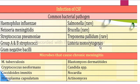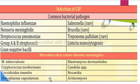Also Listeria monocytogenes. Microbes that cause chronic meningitis include Mycobacterium tuberculosis, Cryptococcus neoformans, Coccidioides immitis, Histoplasma capsulatum, Blastomyces, Candida species, Nocardia, and Actinomyces.